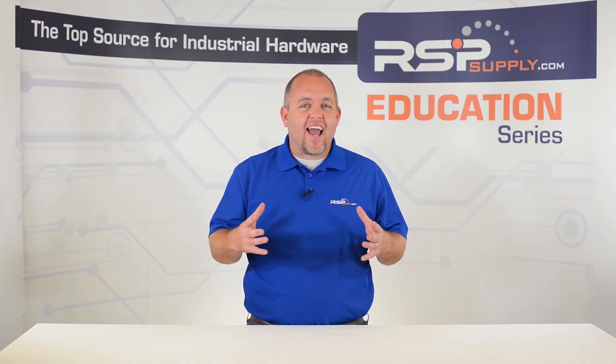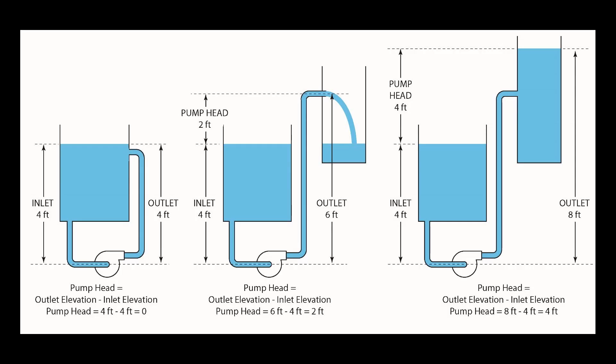Head is the height at which a pump can raise water or a type of fluid upward. Connect a tube or pipe to the discharge end of a pump and measure the height at which the pump can raise that fluid — this is the maximum head of that pump. This measurement can be done in feet, meters, inches, or any other metric used for length.